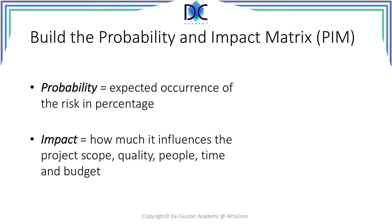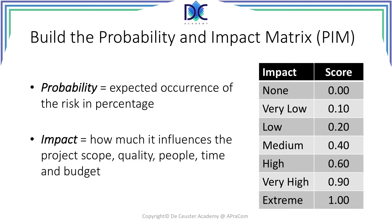The second parameter is the impact — how much does that risk event influence the project scope, quality, people, time, and budget. There is a table on the right-hand side showing the impact and the score. Going from 0 to 1 — or equivalently 0 to 100 — if there is no impact, we give a score of 0, and if we have an extreme impact, the score would be 1 or 100.